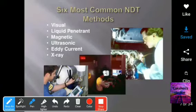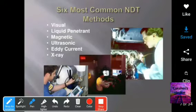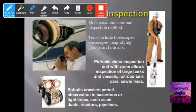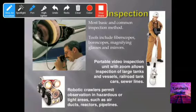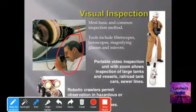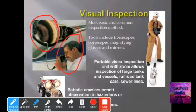The six most common NDT techniques are: visual inspection, liquid penetrant, magnetic testing, ultrasonic, eddy current, and X-ray techniques. After completing your B.Tech, some people take training in these NDT techniques and find employment in this field. This is an important add-on topic. Visual inspection is the most basic and common inspection method — here an inspector takes measurements from a component.